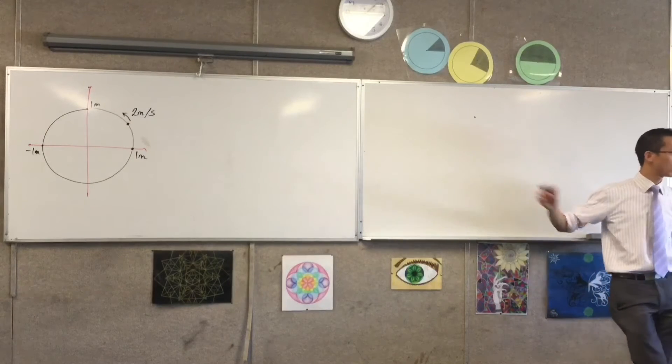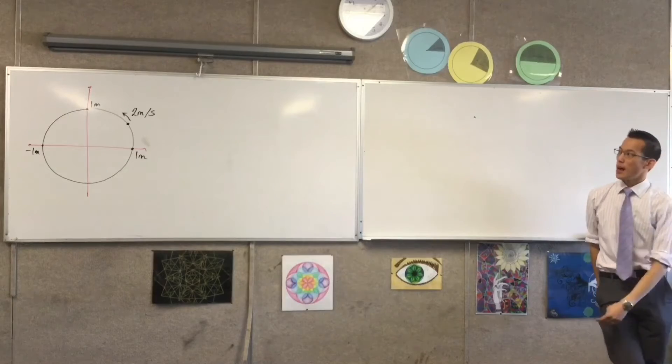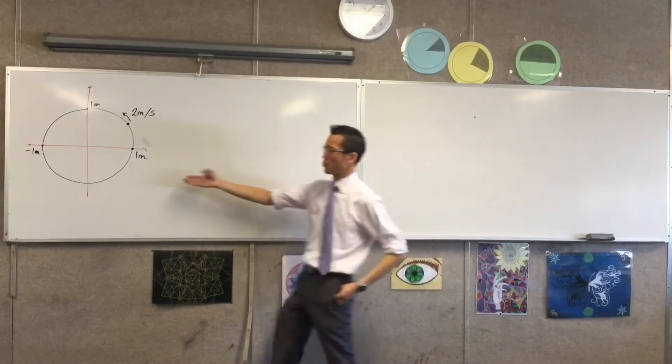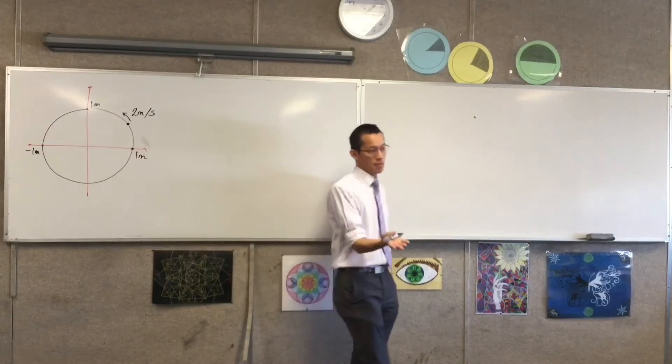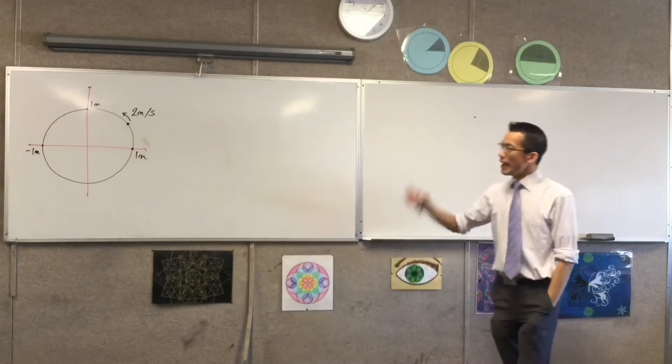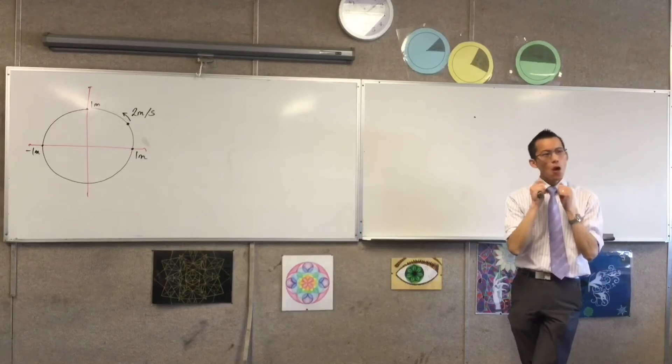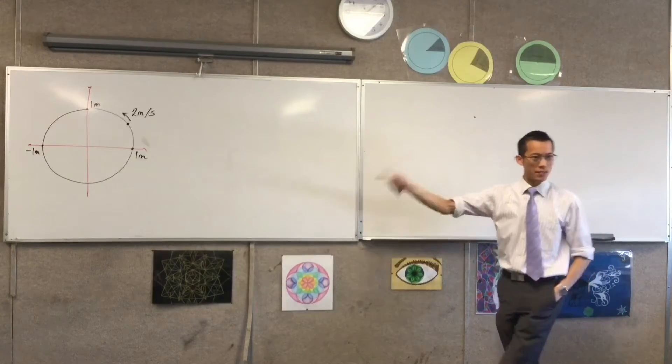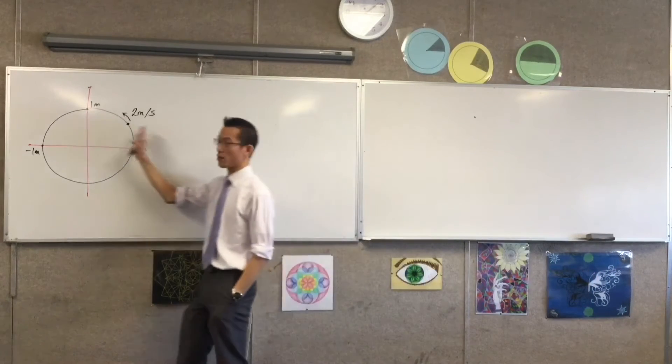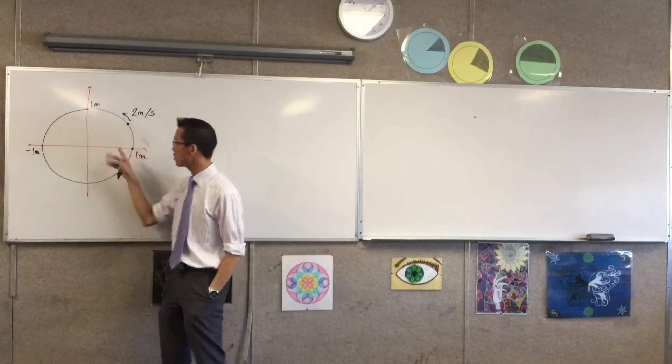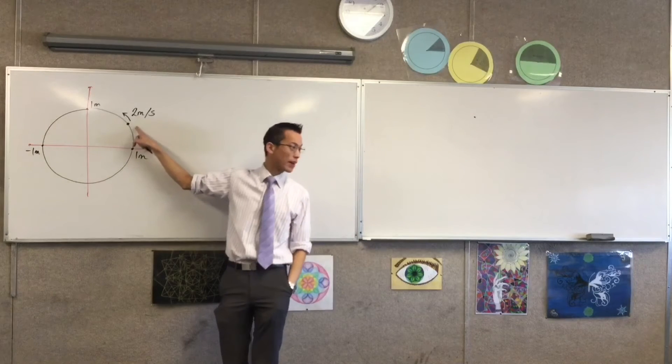So then the question becomes, if we consider the particle just on the top half of the circle. If you want to think about the bottom half, you'll see in a minute it ends up being exactly the same thing, but in reverse. If the particle we're just thinking about on the top half of the circle, the top semicircle, what is the particle's rate of change horizontally? How is x changing as this guy moves around and around the circle?